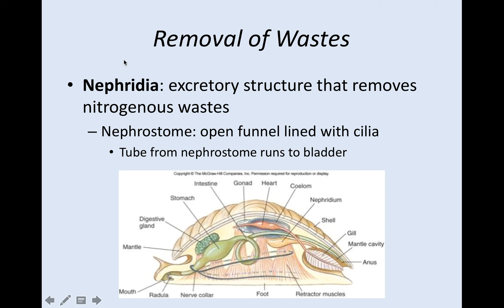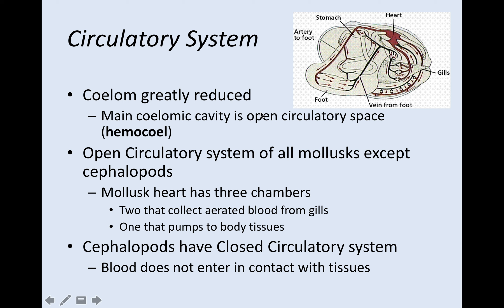How does it remove waste? The nephridia is mostly their excretory structure that gets rid of nitrogenous waste — nephridia starts with N, nitrogenous N. It also has a nephrostome, which is kind of like a funnel that runs to their bladder. All molluscs have an open circulatory system, except for the cephalopods. The body cavity is greatly reduced around organ systems, so they usually have some type of open circulatory space.